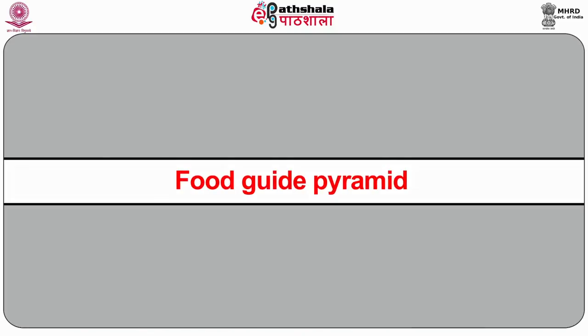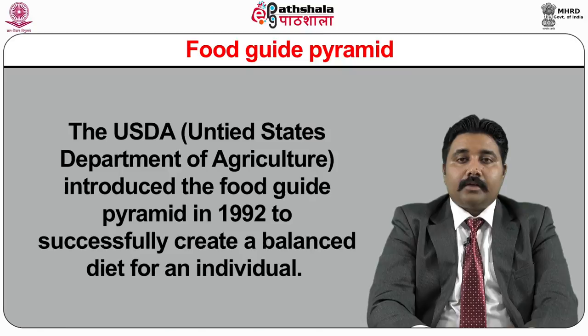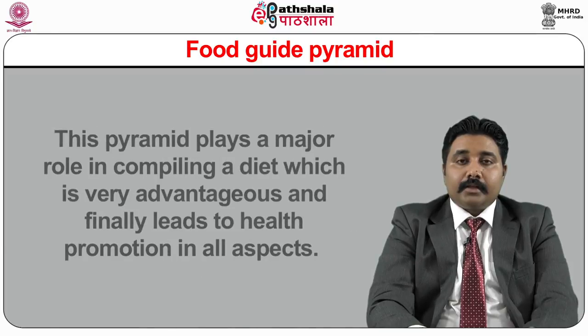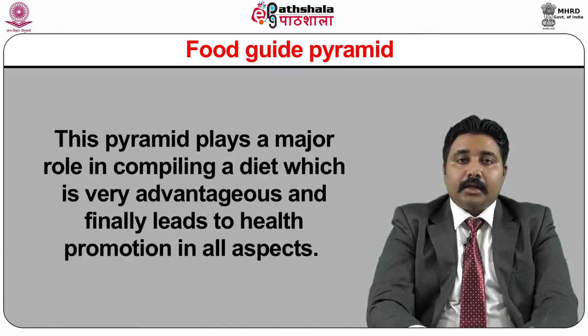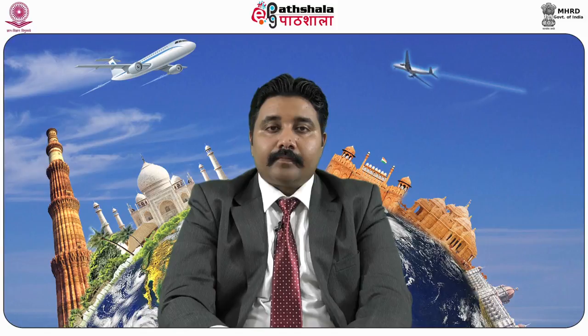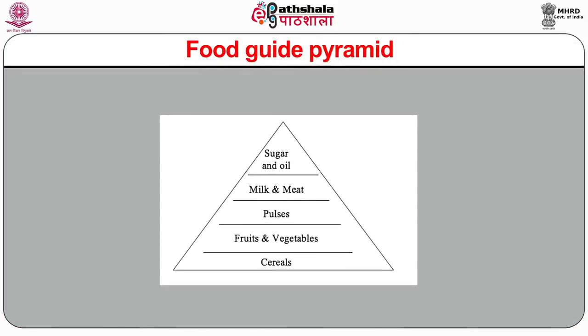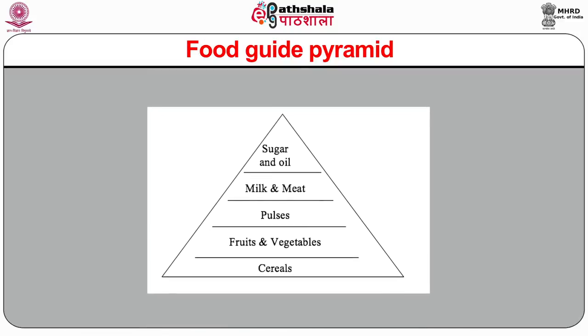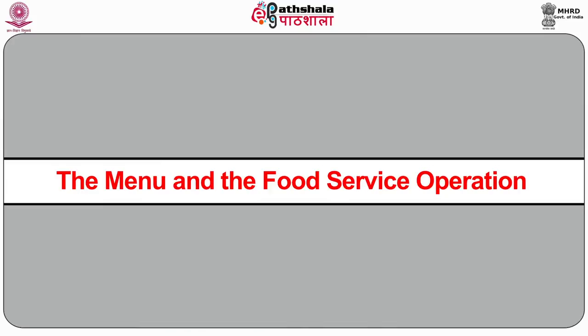The Food Guide Pyramid was introduced by the USDA — United States Department of Agriculture — in 1992 to successfully create a balanced diet for an individual. This pyramid plays a major role in compiling a diet which is advantageous and leads to health promotion in all aspects. Principles of balance, variety and moderation can be incorporated using the food guide pyramid, which from base to top includes cereals, fruits and vegetables, pulses, milk and meat, and sugar and oil.